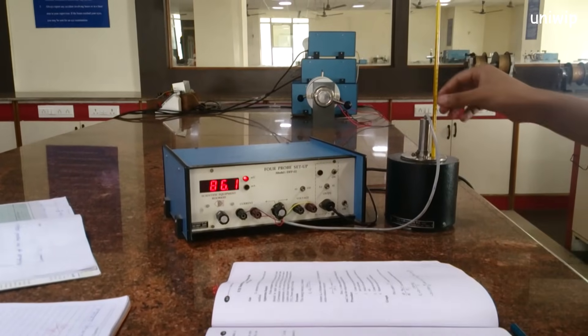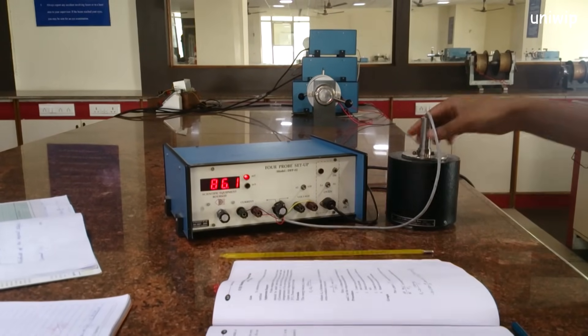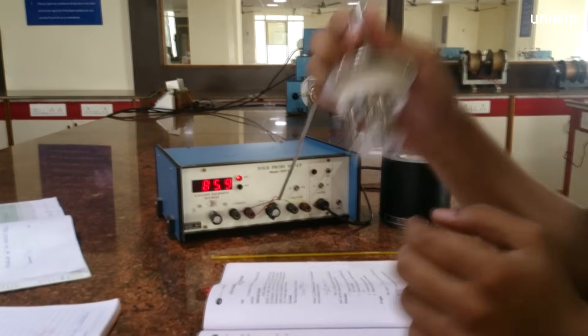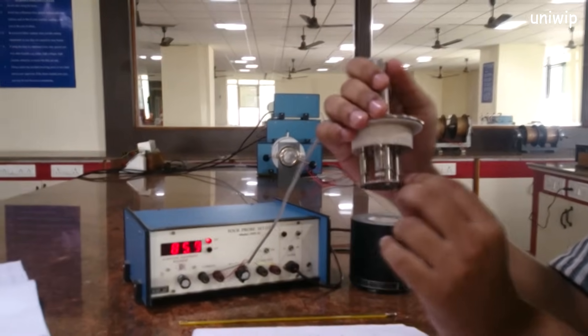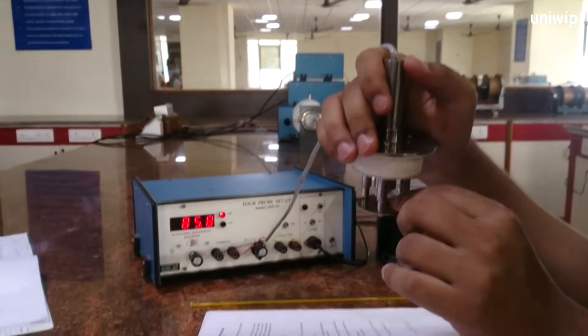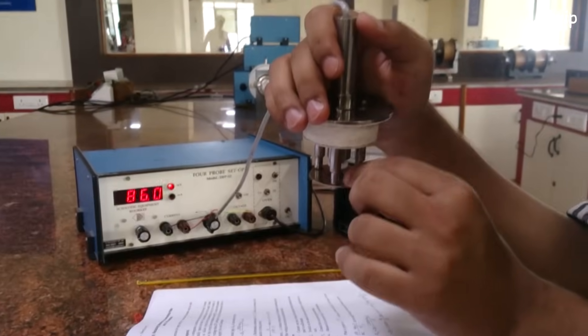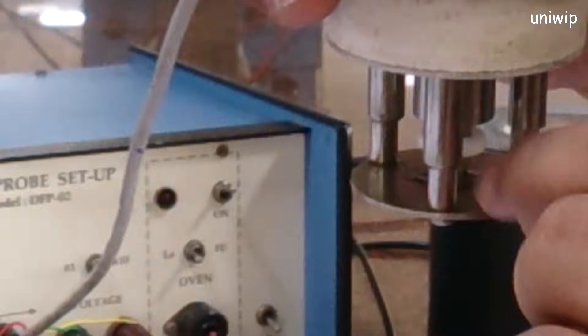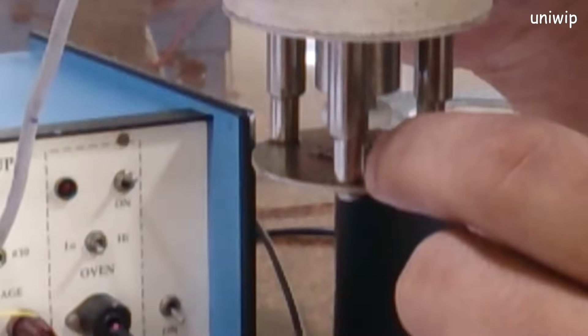Before starting, let me show you what a 4 probe is. As you can see it over here, in this part, these are the 4 probes, and inside the bottom base, it has a semiconducting wafer. So we're gonna measure the resistivity of this semiconducting wafer right here.